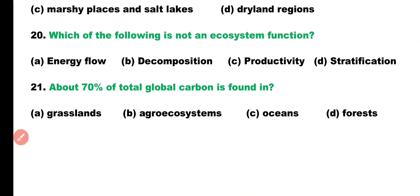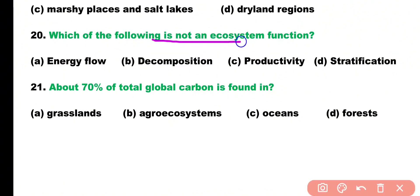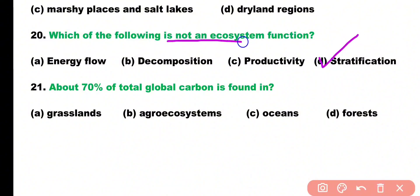Question number twenty. Which of the following is not an ecosystem function? Options: energy flow, decomposition, productivity, or stratification? Correct answer is option D. Stratification is not a function of an ecosystem.